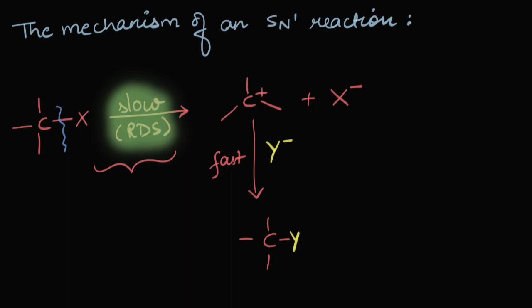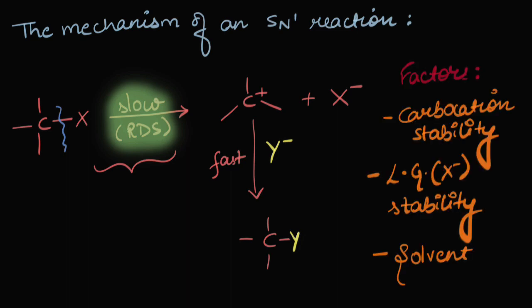So the factors affecting the rate of the reaction would be: carbocation stability — the more stable the carbocation, the more quickly it will form — and leaving group stability. If the leaving group is not stable alone, it would want to attack the carbocation again and we won't get the product. So it should be stable alone, happy alone, so that it doesn't attack the carbocation again. There's also a hidden factor: the solvent — we'll talk about it later.